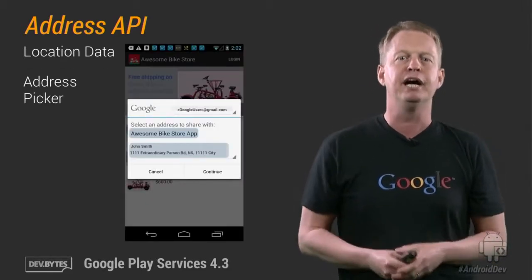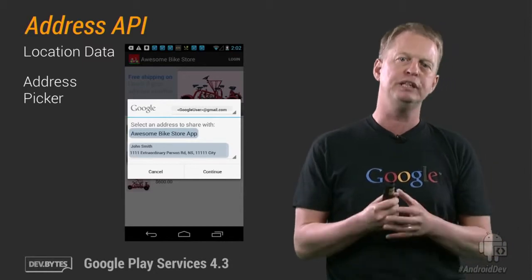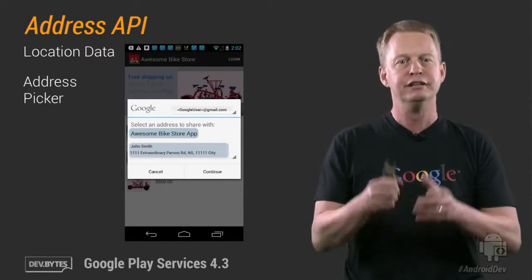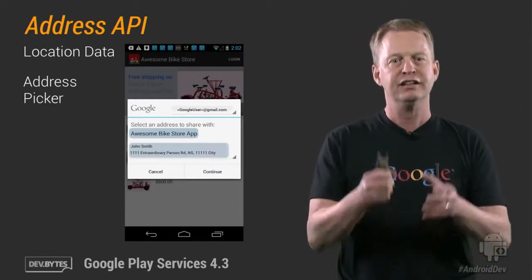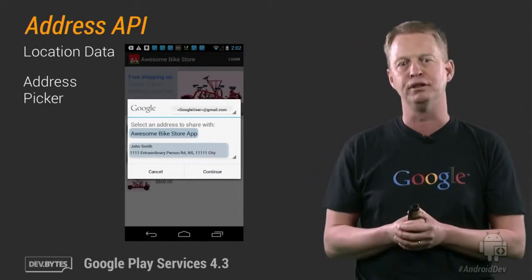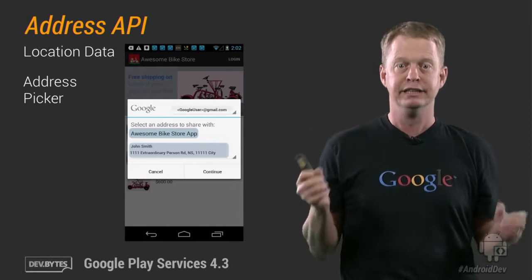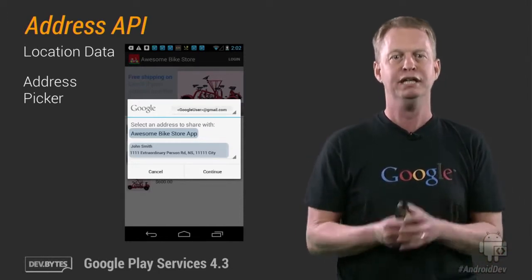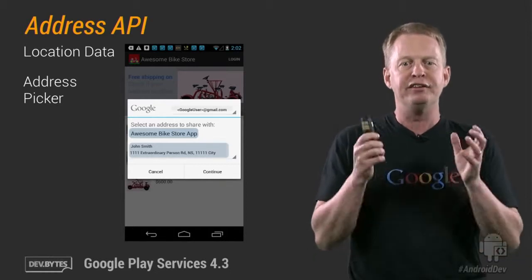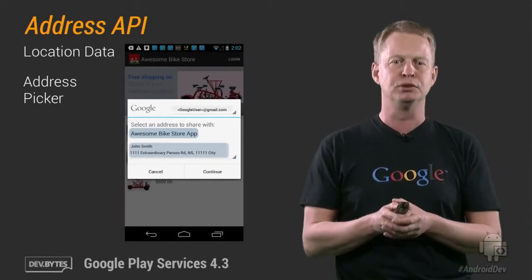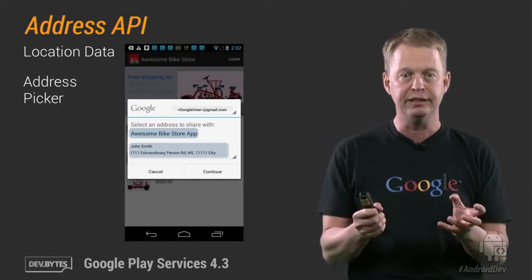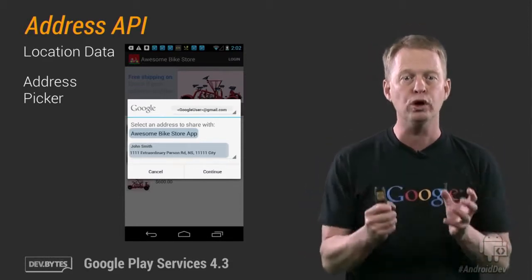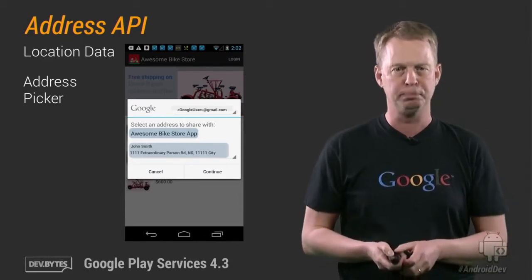With the Address API, your app can present a user interface which displays all addresses registered by the user. The user can then select an address, such as John Smith in the example on the picture, and the address will be made available to the app to complete the purchase. There is no more messing around with thumbs on small keys. Shopping on your smartphone just became a walk in the park, thanks to Google Play Services.